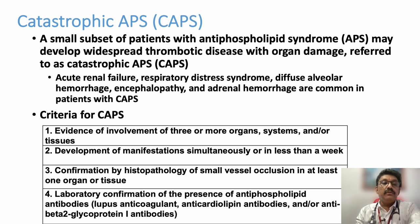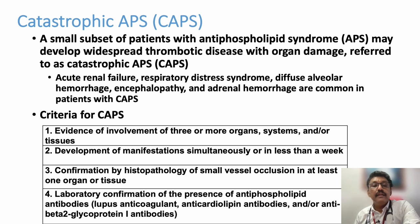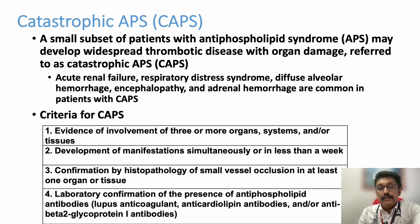The diagnostic criteria for catastrophic APS include: evidence of involvement of three or more organ systems — something like a multi-organ dysfunction syndrome; development of manifestations simultaneously or within less than one week; confirmation by histopathological small vessel occlusion in at least one organ; and laboratory confirmation of antiphospholipid antibodies. Histopathological confirmation is difficult in routine clinical practice; it can only be done if there is skin involvement. Otherwise we have to depend on lab investigations showing antiphospholipid antibody positivity and multi-organ dysfunction.